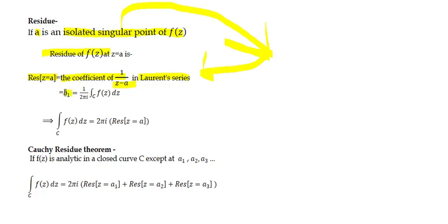That coefficient is b1, and b1 equals 1/(2πi) times the contour integral of f(z) dz along curve C. Rearranging, the integral along curve C of f(z) dz equals 2πi times the residue at z equal to 'a'.